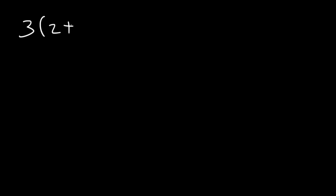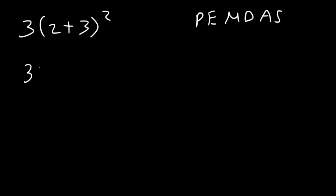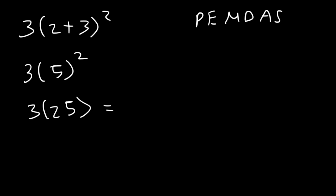Now try: 3 times the quantity 2 plus 3, squared. Work inside the parentheses first, then apply the exponent before multiplying. 2 plus 3 is 5. 5 squared is 5 times 5, which is 25. Then 3 times 25 is 75.